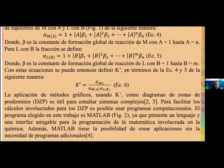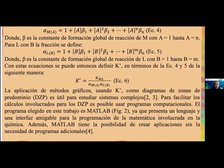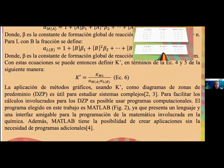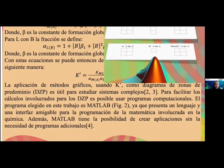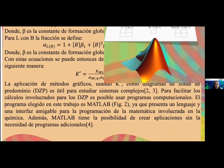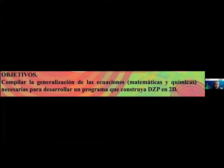Para facilitar los cálculos involucrados para los diagramas de zonas de predominio, es posible hacer programas computacionales. El programa elegido en este trabajo es MATLAB, ya que presenta un lenguaje y una interfaz amigable para la programación de la matemática involucrada en la química. Además, MATLAB tiene la posibilidad de crear aplicaciones sin la necesidad de programas adicionales. Por lo que los objetivos de este trabajo son compilar la generalización de las ecuaciones matemáticas y químicas necesarias para desarrollar un programa que construya diagramas de zonas de predominio en dos dimensiones.